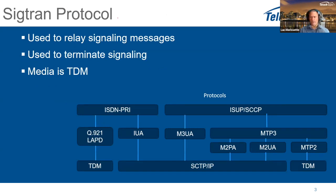The SIGTRAN protocol is used to relay signaling messages and has many different modules. The one we're talking about now is M2UA, but there's also M2PA, M3UA, IUA, and others. In this training we won't use M3UA or M2PA, but they could be used in different scenarios. TecoBridge's device supports all of these protocols.